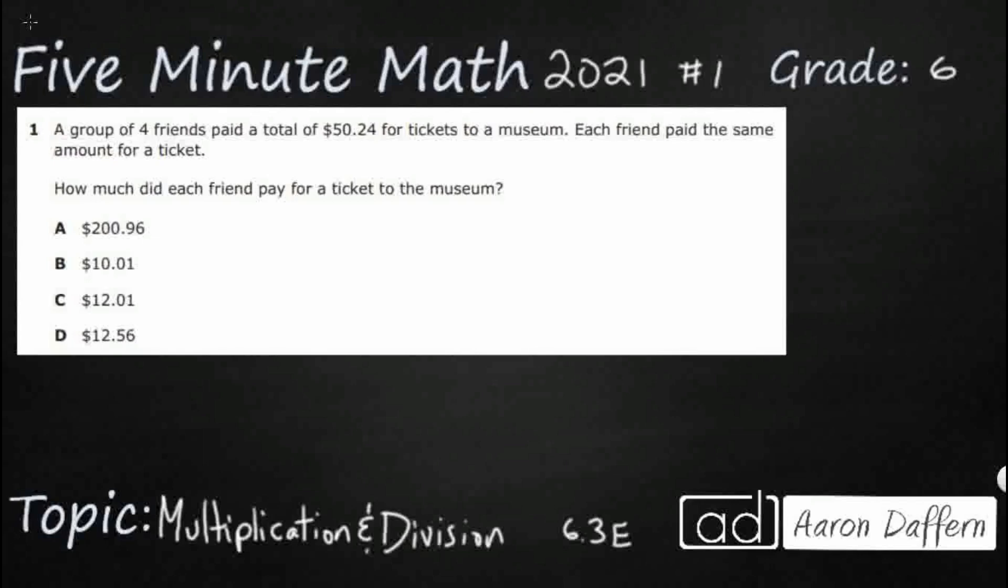Hello and welcome to 5-Minute Math. Today we are looking at the sixth grade concept of multiplication and division. This is standard 6.3E in the great state of Texas, and we are using item number one of the 2021 released STAR test.